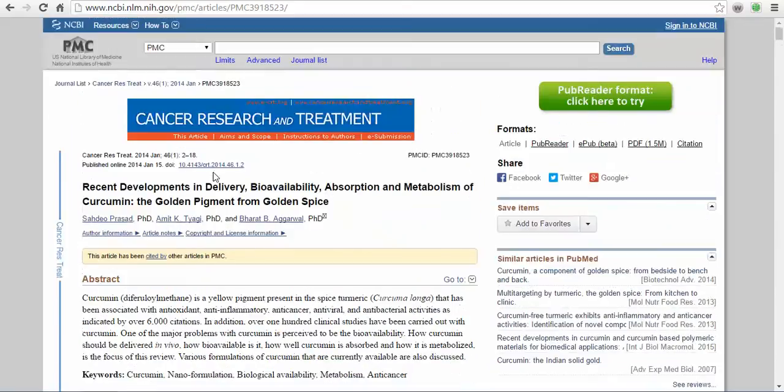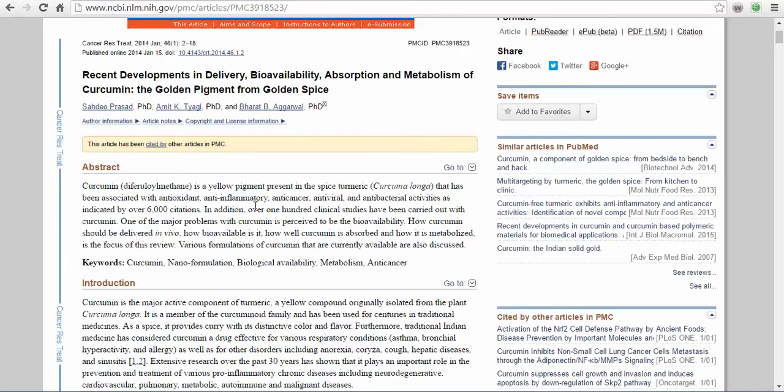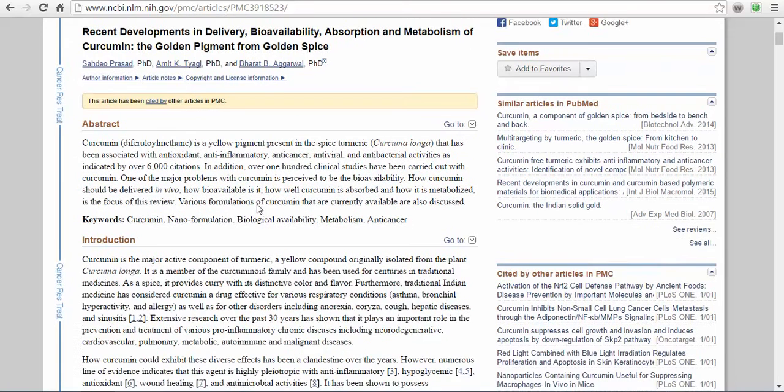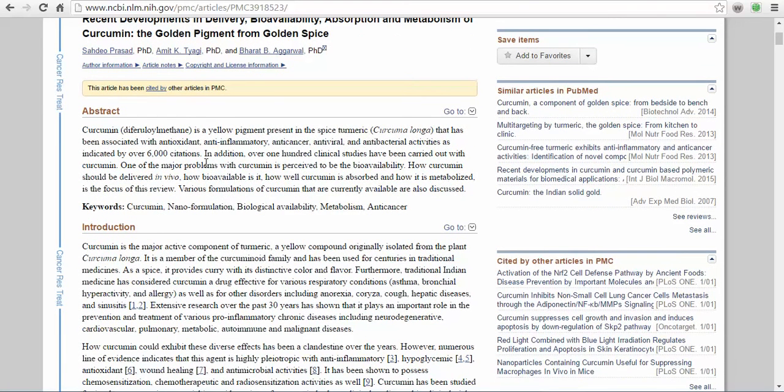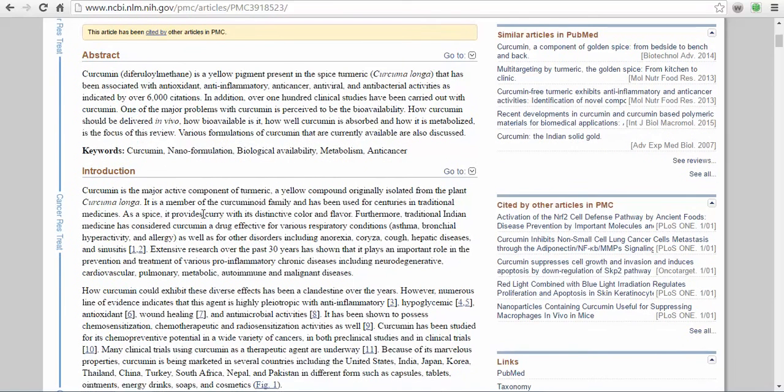Says 'Recent Developments in Delivery, Bioavailability, Absorption and Metabolism of Curcumin.' You can read the abstract. Curcumin is a yellow pigment present in the spice turmeric that has been associated with antioxidant, anti-inflammatory, anti-cancer, antiviral, antibacterial activities, as indicated by over 6,000 citations. It's one of the most widely studied spices or herbs or phytonutrients that you can find in the world. It's incredible.